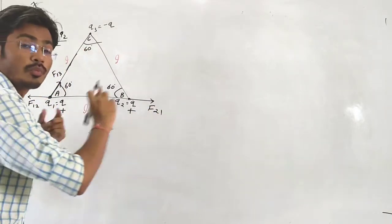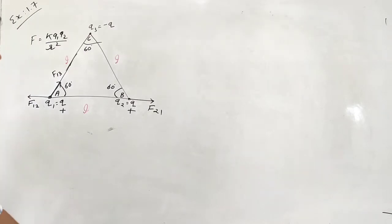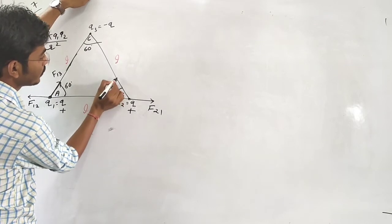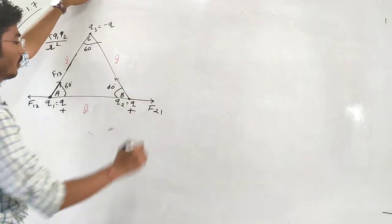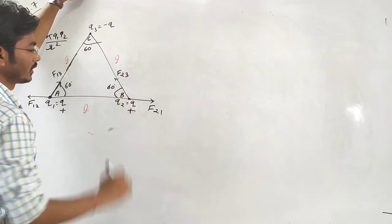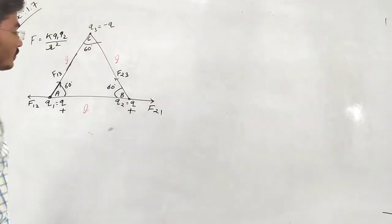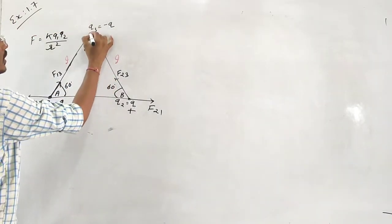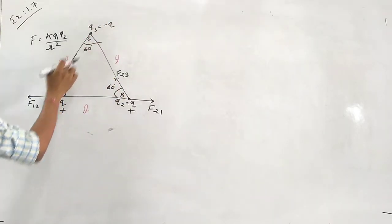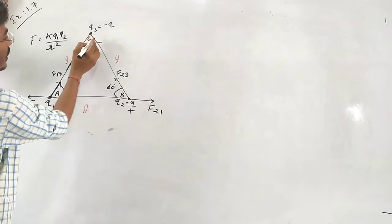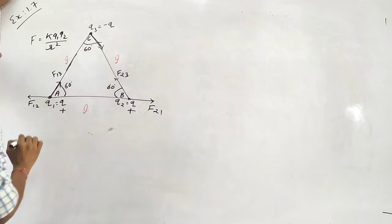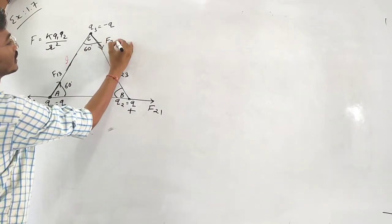Both forces have the same magnitude but act in opposite directions. Similarly, at point C, we have minus charge and plus charge interactions. The force F32 acts in a certain direction, and there is another force acting in a different direction.